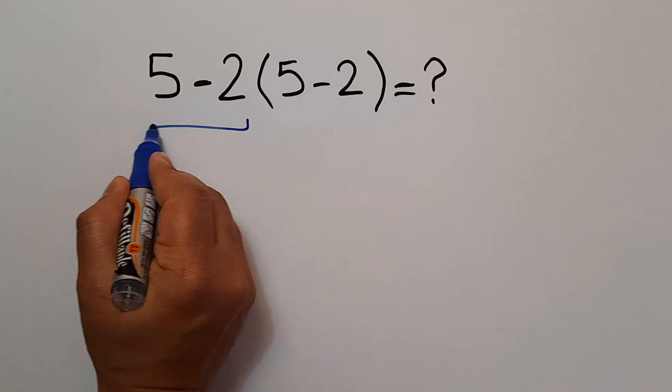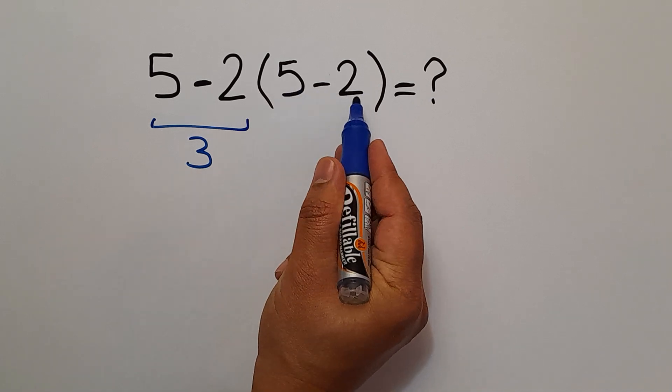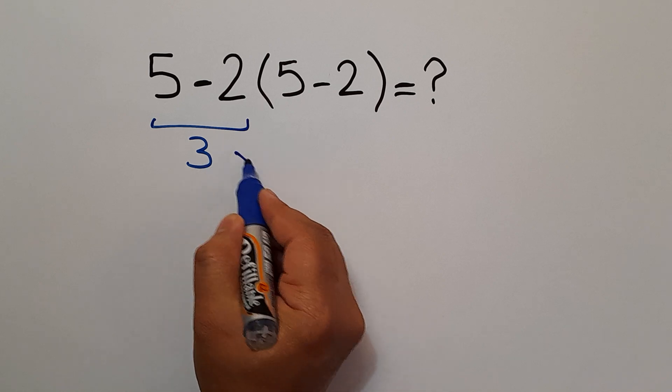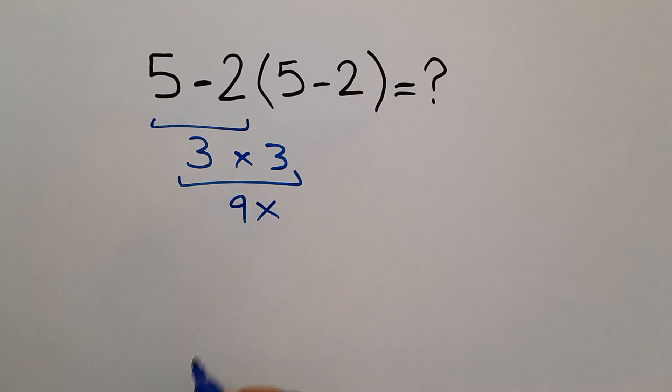5 minus 2 gives us 3, and 3 times—here we have also 5 minus 2 which equals 3—so 3 times 3. And 3 times 3 equals 9. But this answer is not correct.